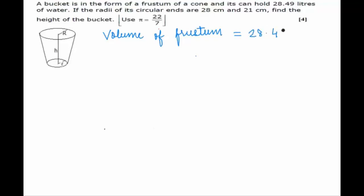But since the other parameters like radii are given in centimeters, we first convert this into centimeter cube, which can be done by multiplying liters by thousand. This is equal to 28,490 centimeter cube.